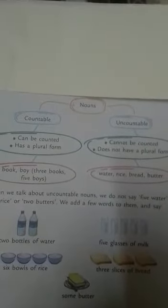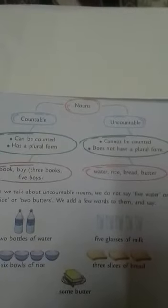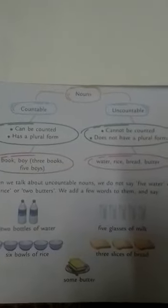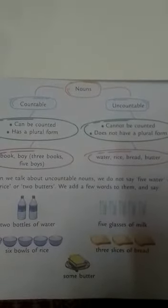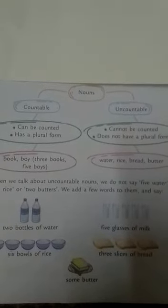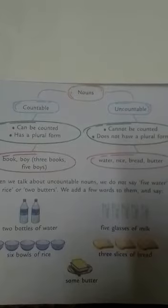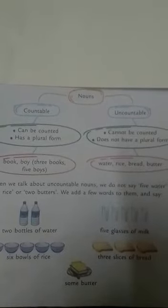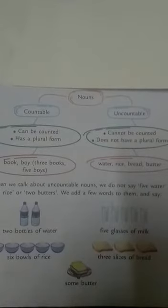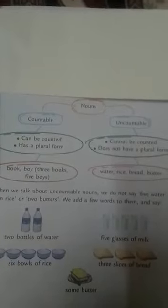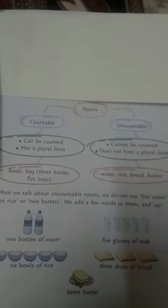Can you see, children? Yes. Write it down. Children, don't get confused. Under nouns: countable nouns, uncountable nouns. Countable nouns — you can count them. For uncountable nouns — you cannot count them. These are the examples. Okay, write it down.